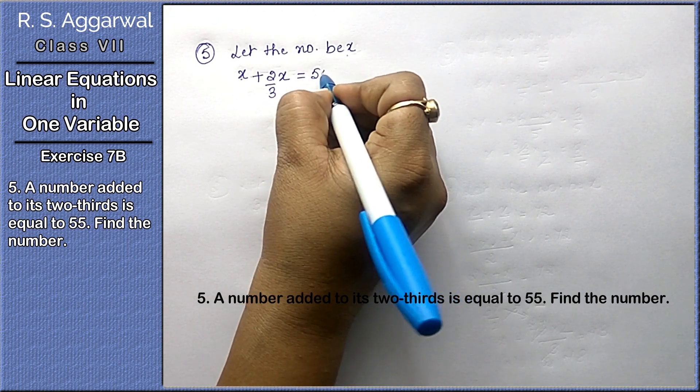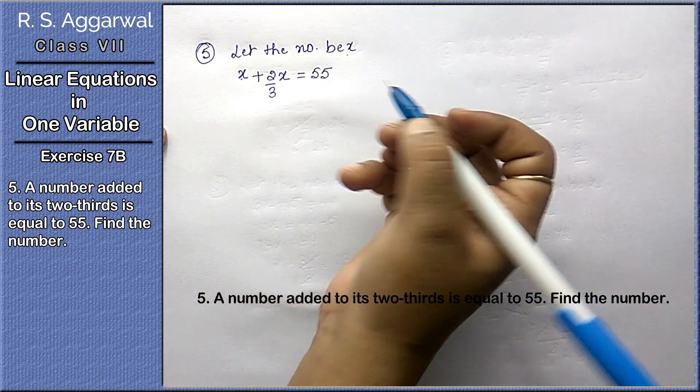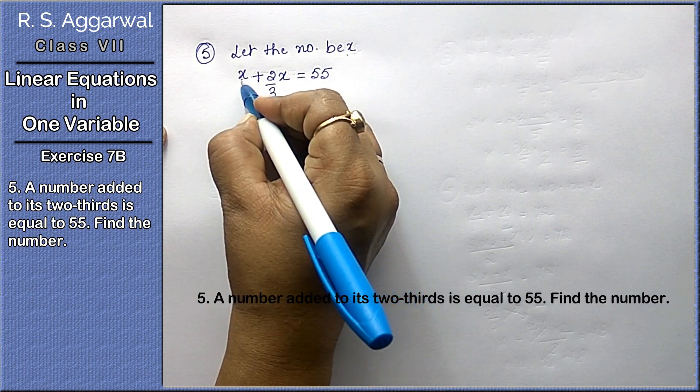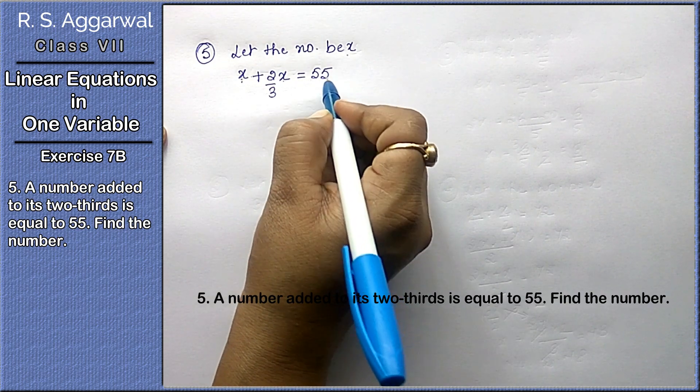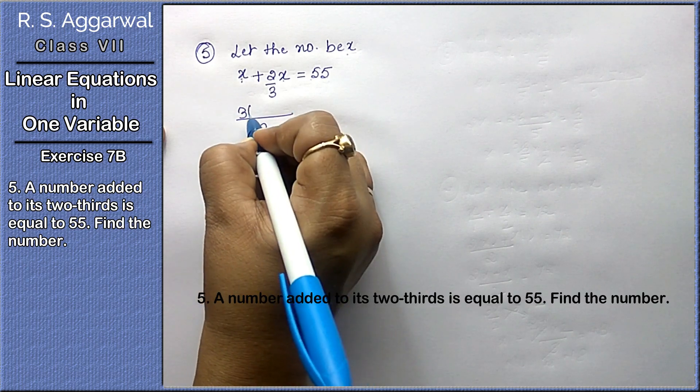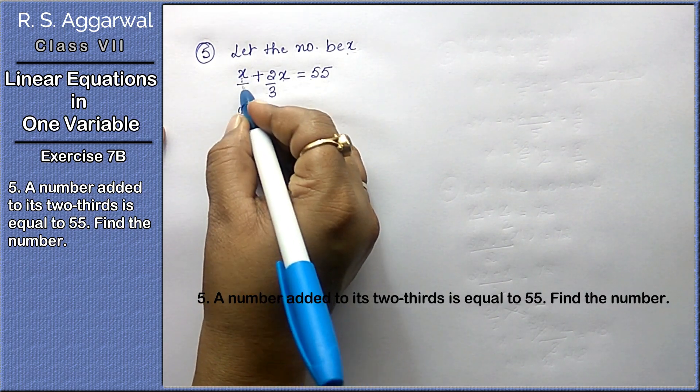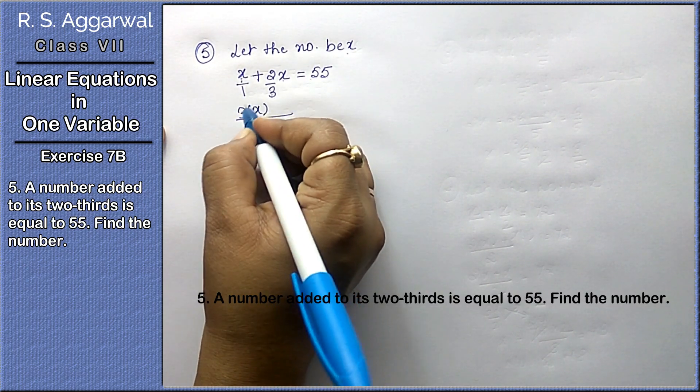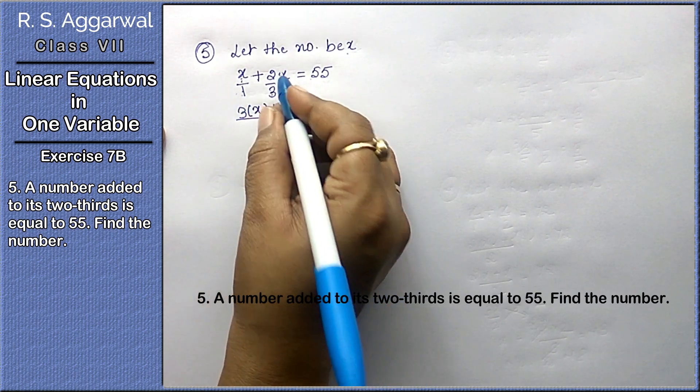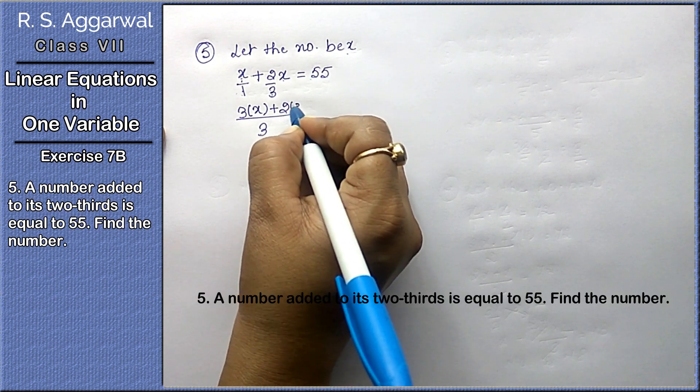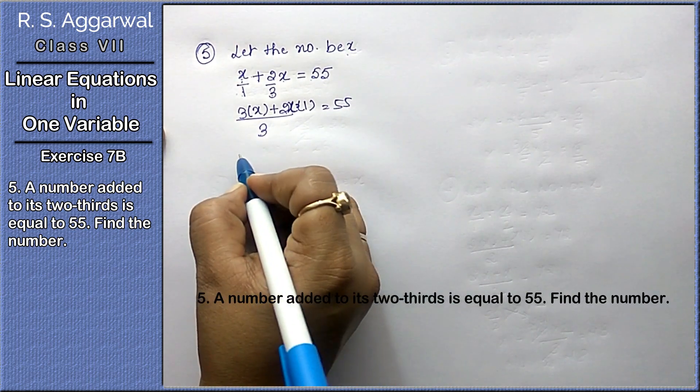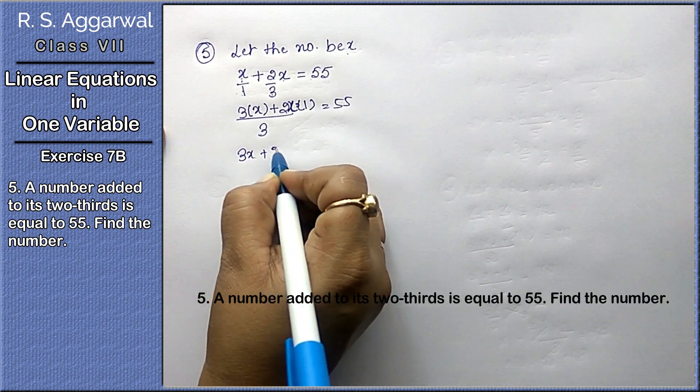Its two-thirds is 2x upon 3, equal to 55. A number added to two-thirds of its number is equal to 55. Now LCM is 3. Multiplication 3, 3 into x plus 2x.